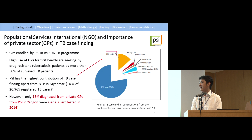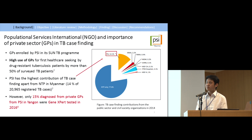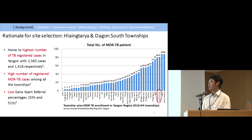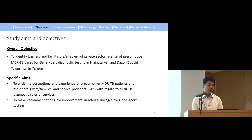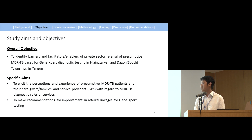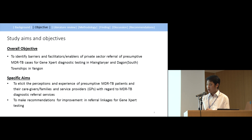The problem in PSI is that only 15% of TB patients from PSI in Yangon underwent GeneXpert testing in 2016. I selected two townships with very high MDR-TB patients and low GeneXpert referral percentages. Our primary objective was to identify the barriers and enablers for PSI presumptive MDR-TB cases to access GeneXpert testing in those two townships in Yangon. Specific aims include eliciting perceptions and experiences of presumptive MDR-TB patients, their caregiver families, and service providers, and making recommendations for improvement in referral linkages for GeneXpert testing.